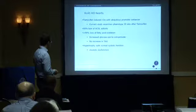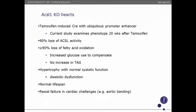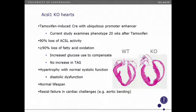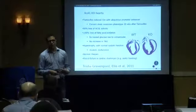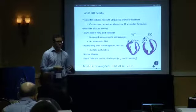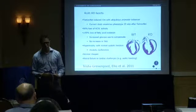Interestingly, in this model you have hypertrophy with some diastolic dysfunction, but normal lifespan, and the animals actually resist heart failure in response to physiological challenges like aortic banding. From my perspective, the implication in aggregate is that there may be reasons to think that phospholipid changes beyond just cardiolipin really do contribute pathologically to the ontogenesis of Barth syndrome.